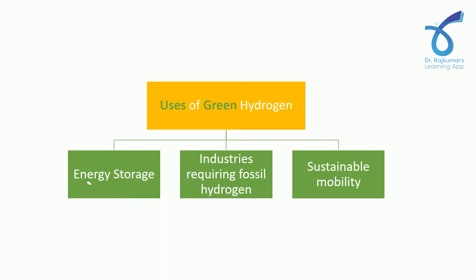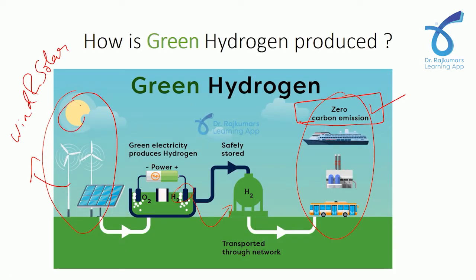The first use of green hydrogen is energy storage. You might wonder why we use hydrogen for energy storage rather than supplying renewable energy directly. The reason is that renewable energy has limitations — solar energy is not available at night, and wind turbine blades do not rotate throughout the day. So when we have good weather conditions, we can use solar and wind energy to manufacture hydrogen and store it, making it easier to tap electricity using hydrogen when needed.